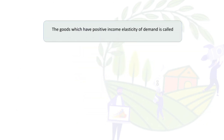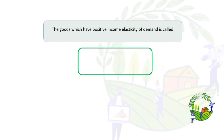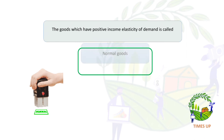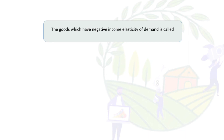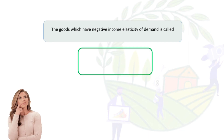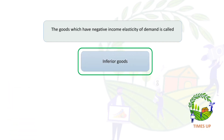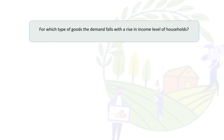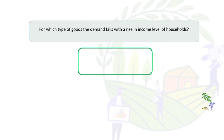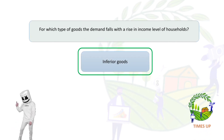Goods which have positive income elasticity of demand are called normal goods. Goods which have negative income elasticity of demand are called inferior goods. For inferior goods, demand falls with a rise in the income level of the household.